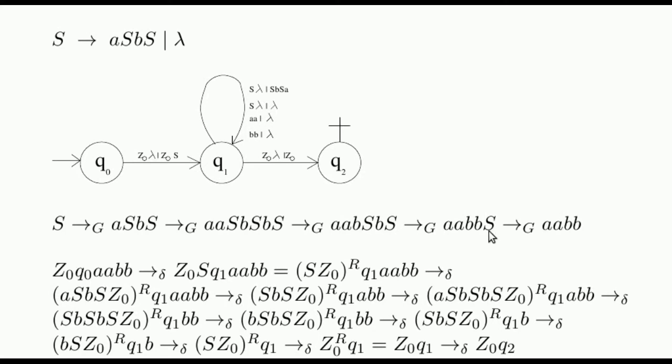Let's see how the PDA recognizes this word by simulating the corresponding left derivation. This is the initial configuration with Z0 at the stack's bottom, and the automaton in the initial state. We begin executing this transition and will reach this configuration. In order to make the explanation of the simulation clearer, we will write the contents of the stack's reversed, such that the leftmost symbol is the stack's top symbol. Note that, at the top, we can find S, which corresponds to the beginning of the derivation.